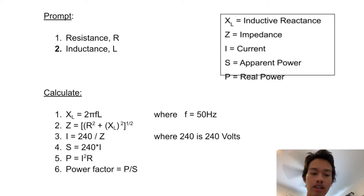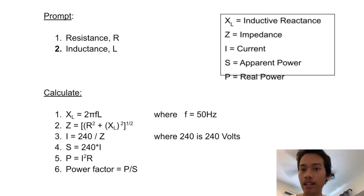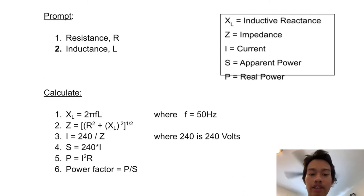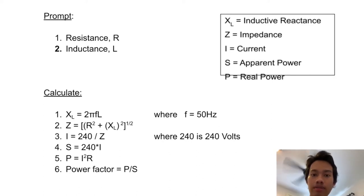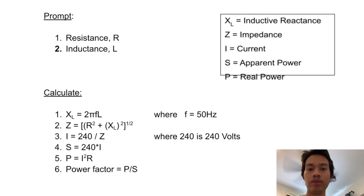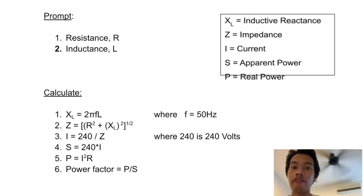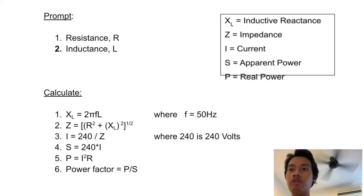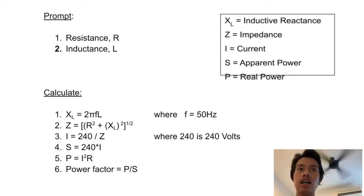In both cases, we use a frequency of 50 Hz and 240 V for our power supply, because that is what TNB supplies to our homes. Once we get the inductive reactance and impedance, we use them to calculate the apparent power and real power, and thus find the power factor for that particular house. With the power factor value, we can determine whether each individual house is efficient and decide whether power factor correction or an additional substation is needed.